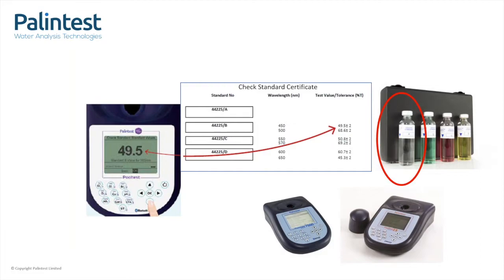will need three coloured standards and a blank to check all six wavelengths. The blank is this clear, colourless solution, usually labelled standard A, and the instrument uses this as its reference of what 100% transmission is. The certificate that is supplied with a set of check standards tells you which standard to use for each wavelength and the value that it should read.